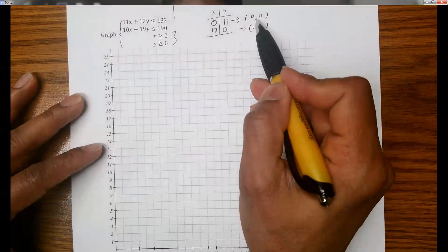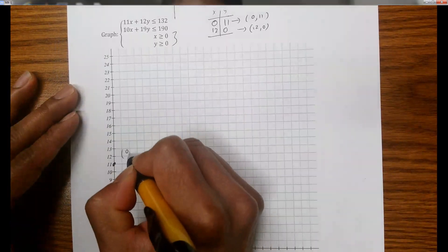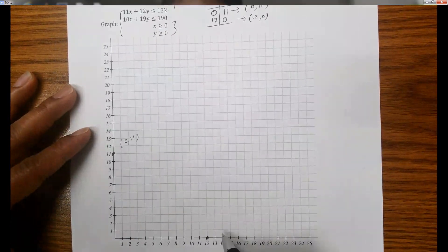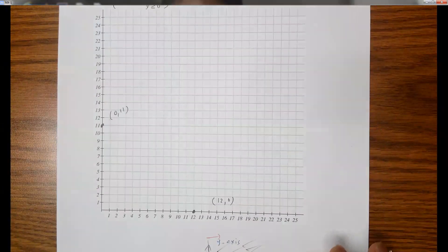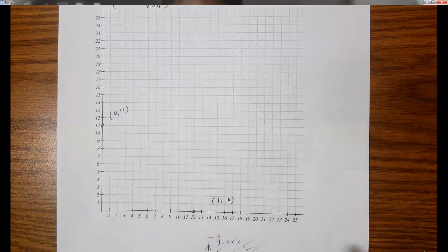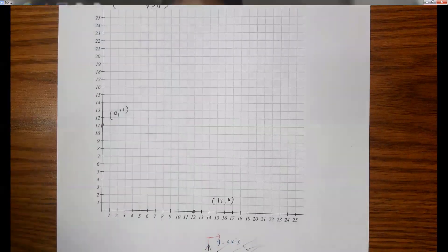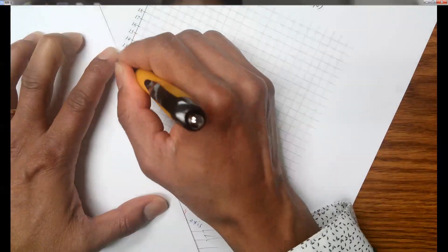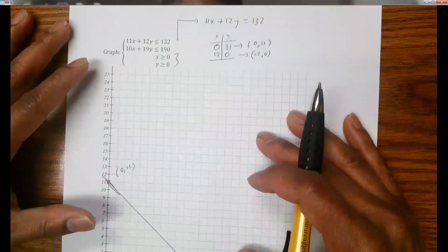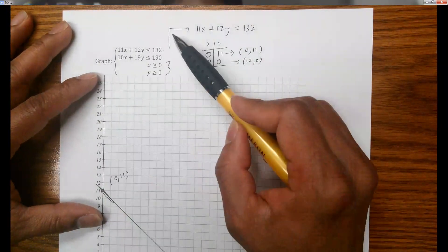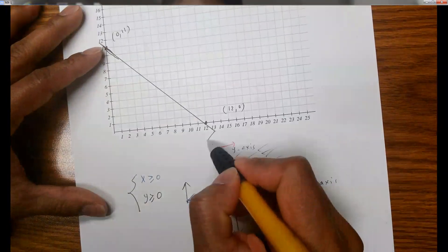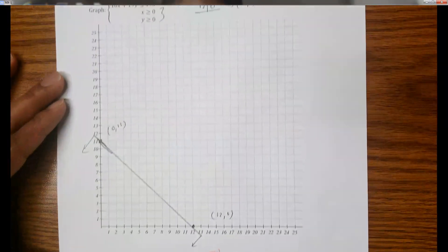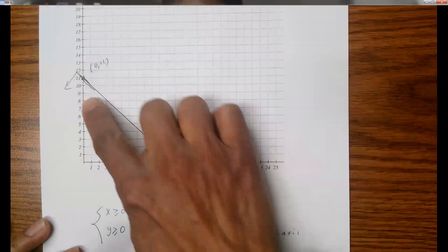Our goal is not just to plot the line but the inequality, which is less or equal. So first we plot the points (0, 11) on the y-axis and (12, 0) on the x-axis, then join these two points. Because there is a less-or-equal sign, we draw a solid line. Less or equal means we shade downward, so that is the region we're looking for the first inequality.